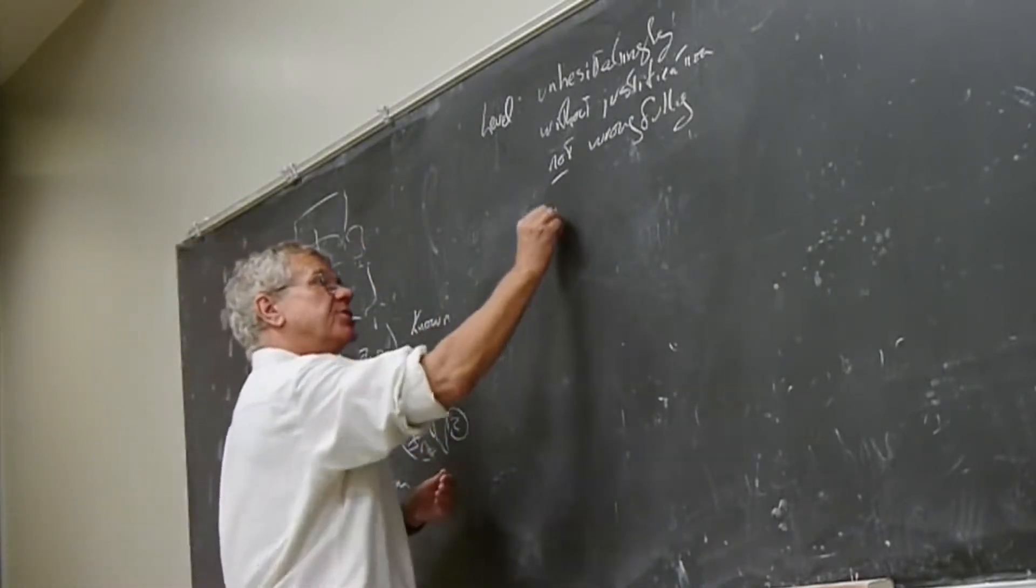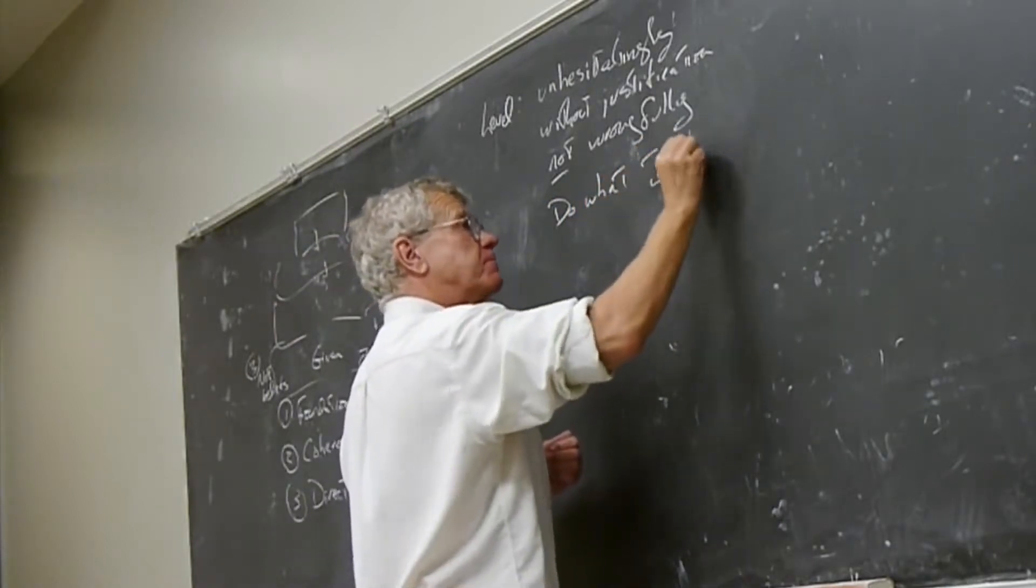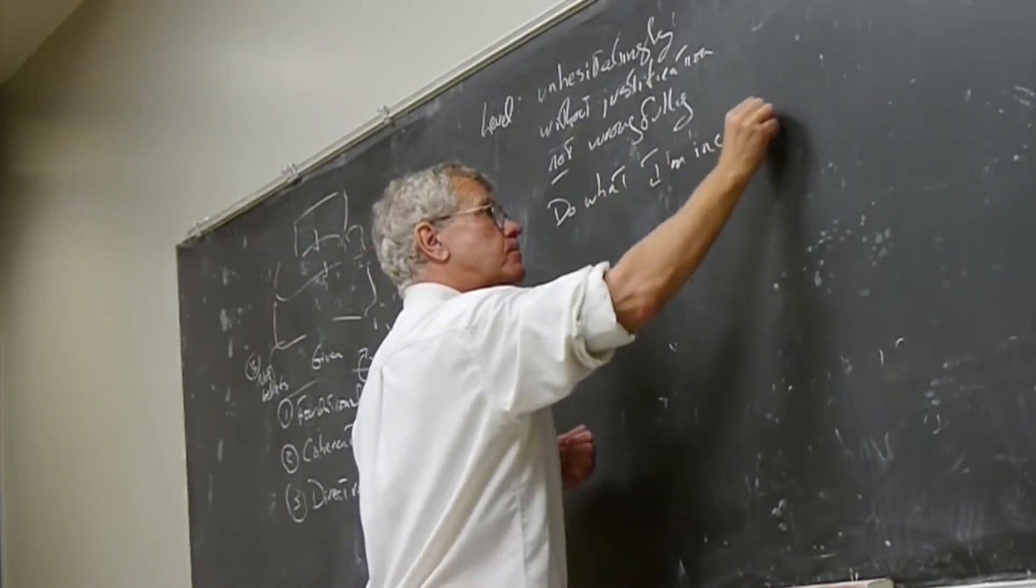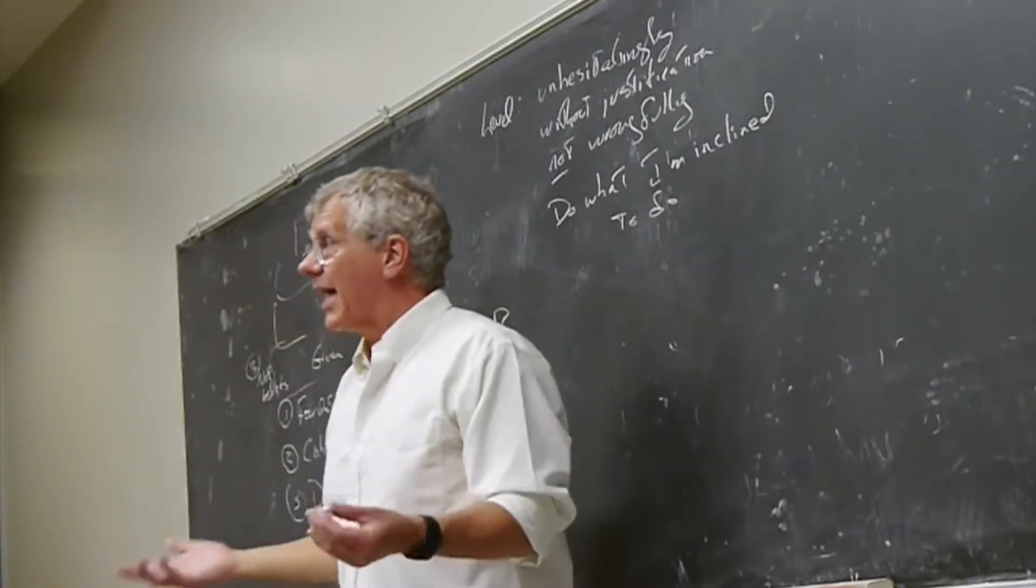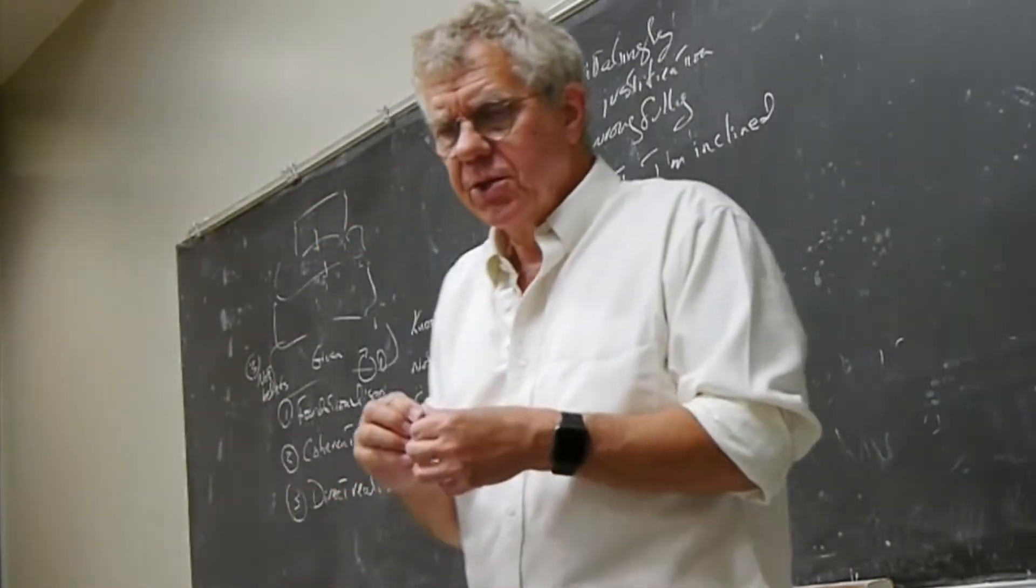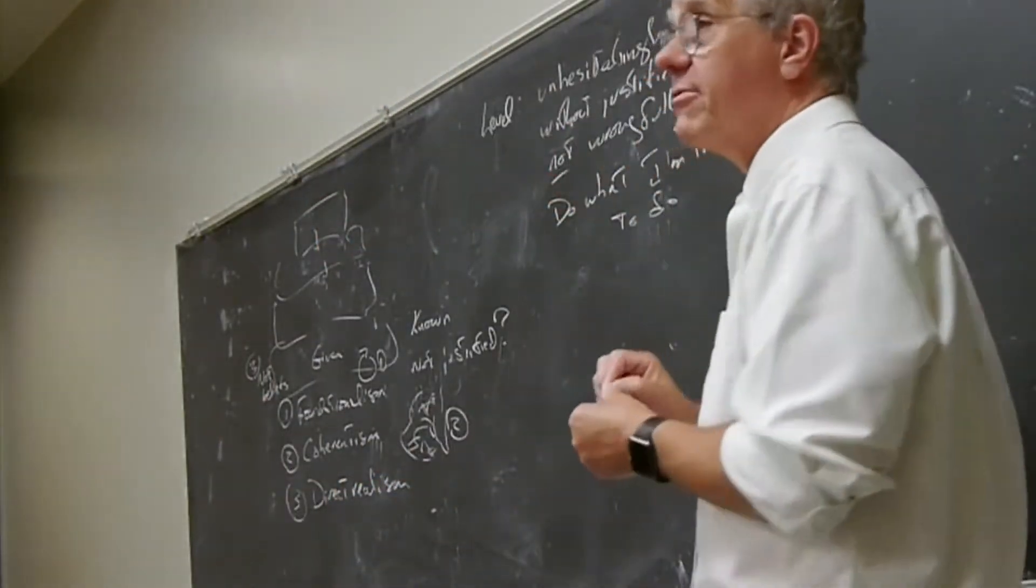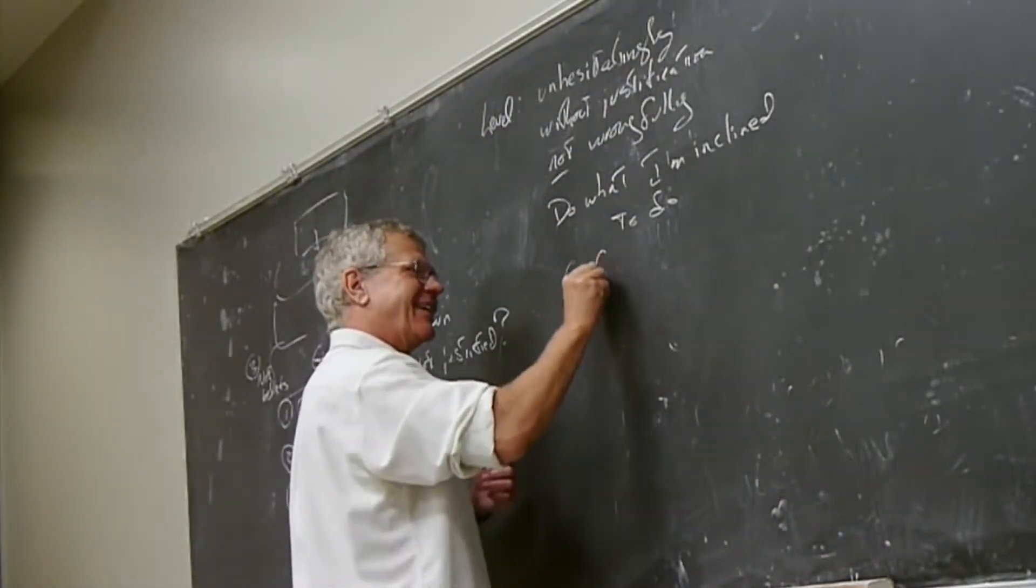There's a sort of pun in the German here that's hard to represent in English. The word for justification basically means something like right-making. And so there is nothing that makes it right for me to respond in this way, and yet it is not not right. So I'm not not right, but on the other hand, there's nothing making it right. I'm just responding that way. And so, in short, I just do what I'm inclined to do.